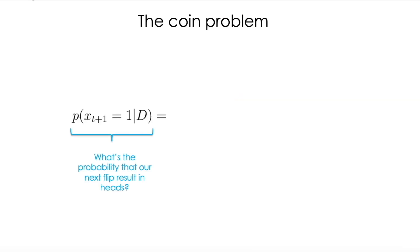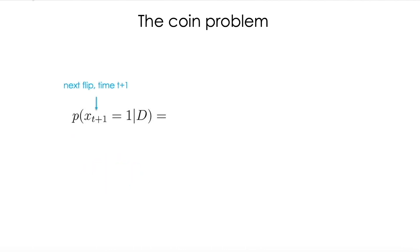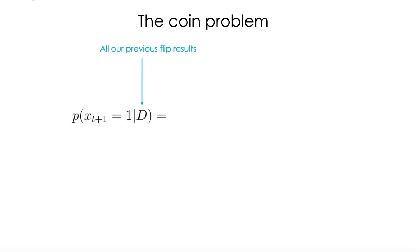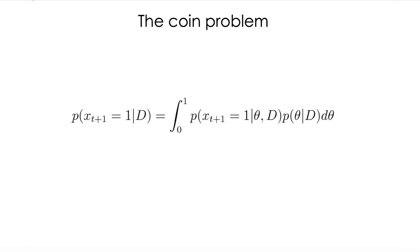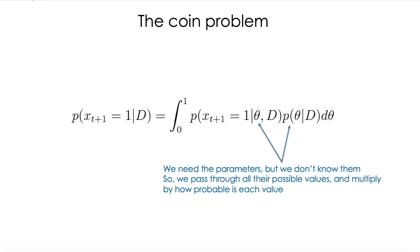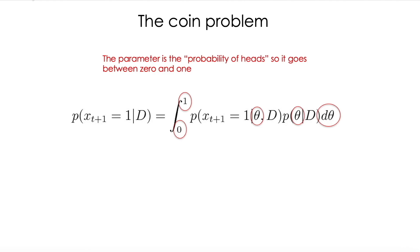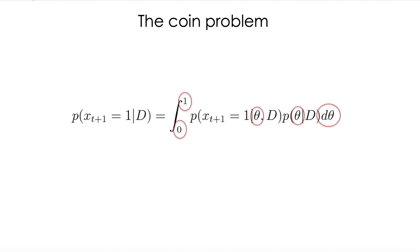This term means: what's the probability that our next flip results in heads? This means the next flip at time t+1. We are representing heads as one in our experiment, and D is all our previous data — in this case our previous flip results. We need to include a parameter theta, and since we don't know it, we need to integrate over all the possibilities. Theta is a probability, so it goes between zero and one, and we multiply by its posterior probability.